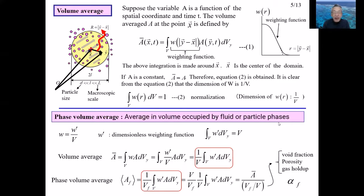The volume fraction of fluid has a few names; for example, it is called void fraction, porosity, or gas holdup. The history of multi-phase flow is not long compared to traditional fluid mechanics. Liquid-gas, gas-solid, and solid-liquid flows have been studied independently, so the naming of some technical terms is not unified even today. In this lecture, the Greek symbol alpha is used for volume fraction. In the field of powder technology, the Greek symbol epsilon is popular for the volume fraction of the fluid.